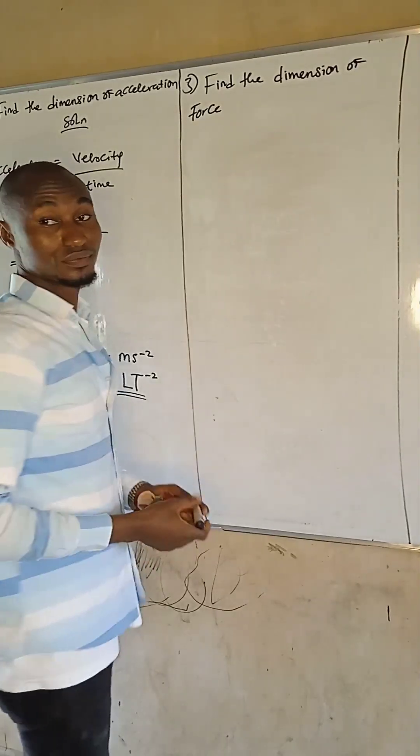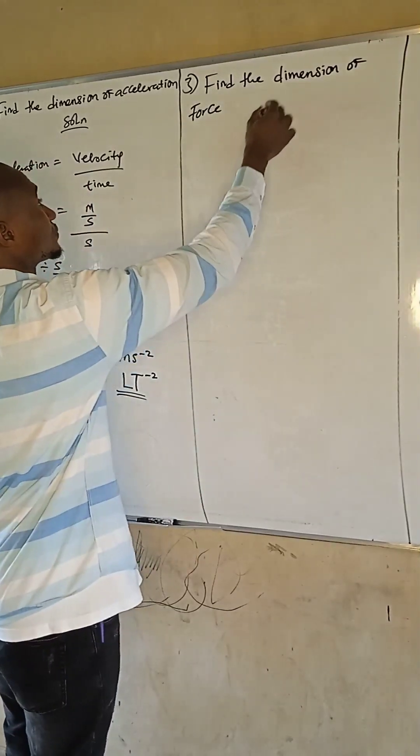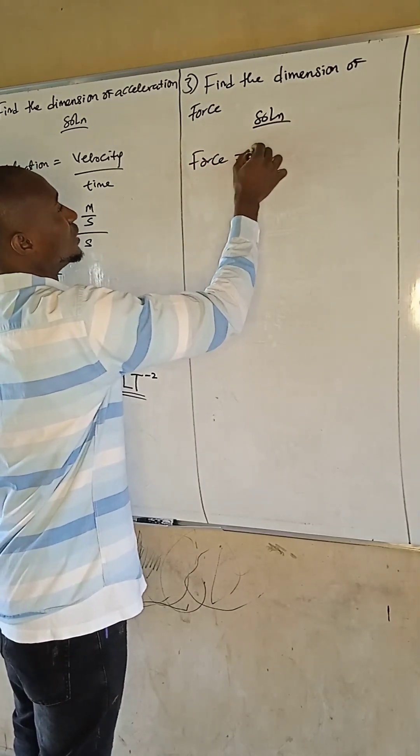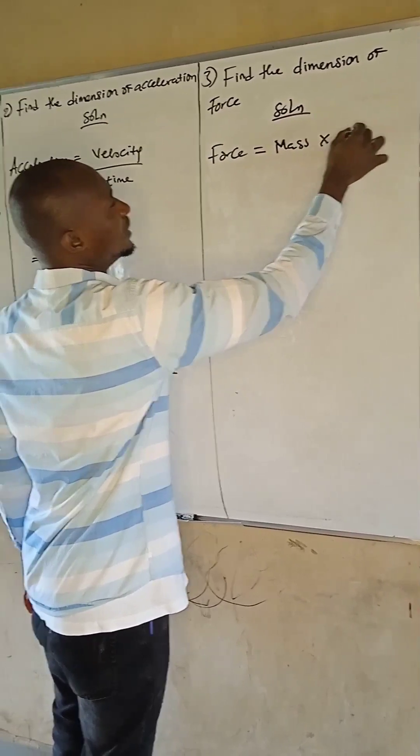Next question: find the dimension of force. Solution: force is equal to mass times acceleration.